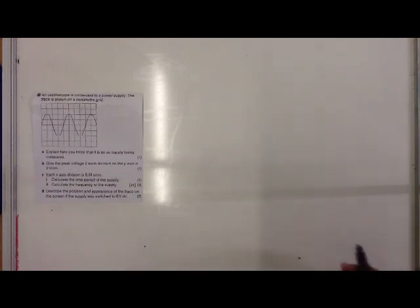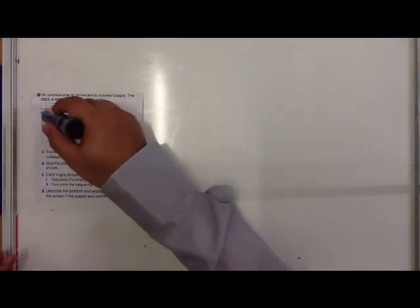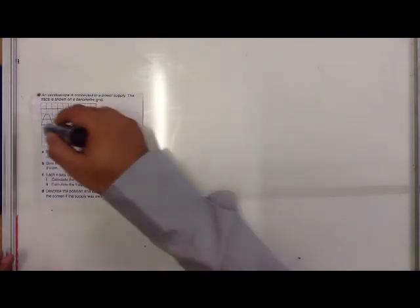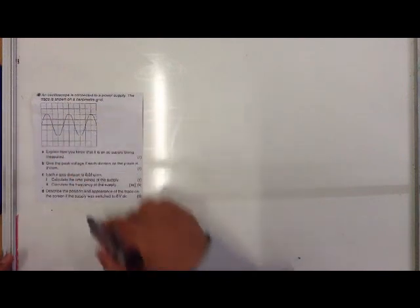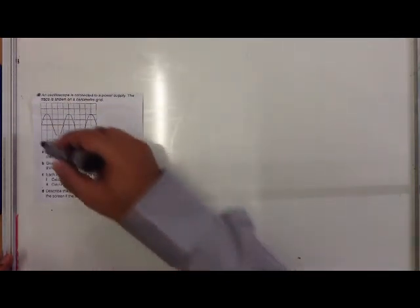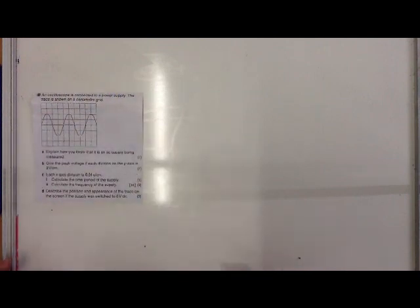You either get AC or DC. AC repeatedly reverses its direction—it flows one way and then the other in successive cycles. If we look at this trace here, you can see that it goes up and goes down, up and down. The center line here is really the level line, and you can have positive above that and negative below that.